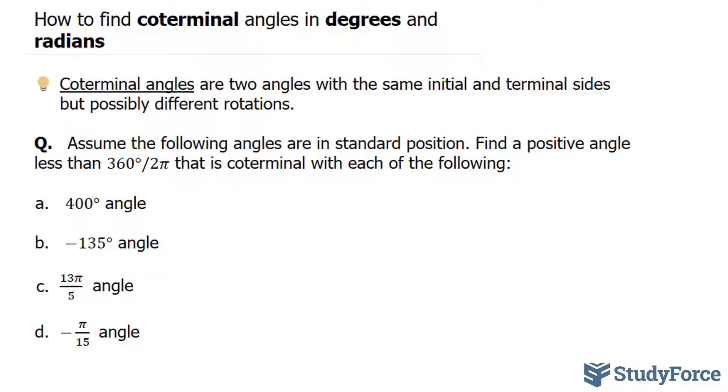In this lesson, I'll show you four examples on how to find coterminal angles in degrees and radians. Coterminal angles are two angles with the same initial and terminal sides, but possibly different rotations.